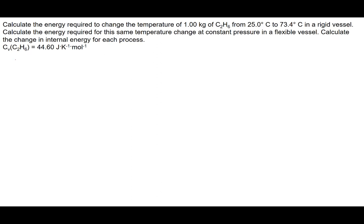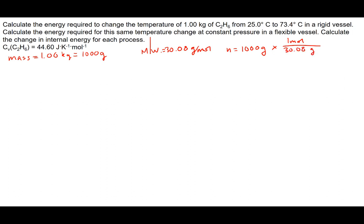Let's first write out and do a few short calculations to get our baseline going. The mass of C2H6 — the ethane — is 1.00 kilograms. A good thing to do is first convert that into grams, so that's going to be 1,000 grams, because 1 kilogram is 1,000 grams. The molecular weight for ethane is 30.08 grams per mole. So we should calculate the number of moles: moles N equals mass divided by molecular weight, which is 1,000 grams times 1 mole over 30.08 grams, giving us 33.24 moles.